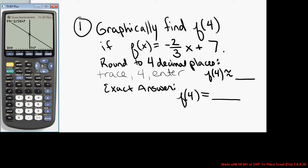On the graphing screen, we see the trace button. You hit trace, type the number 4, and press enter. The calculator places the cursor on x equals 4 and it tells you at the bottom of the screen the y value. The y value is approximately 4.3333.